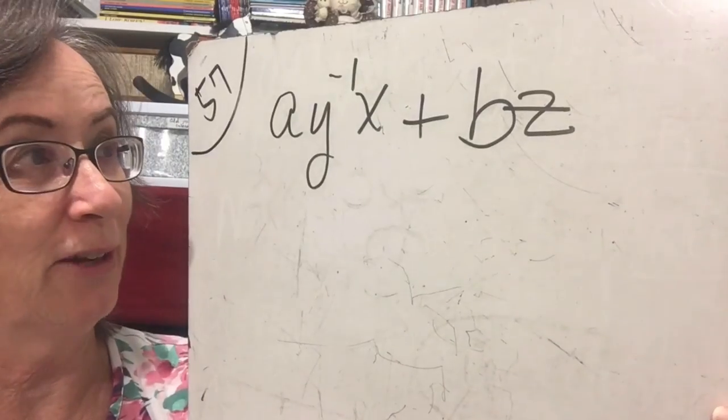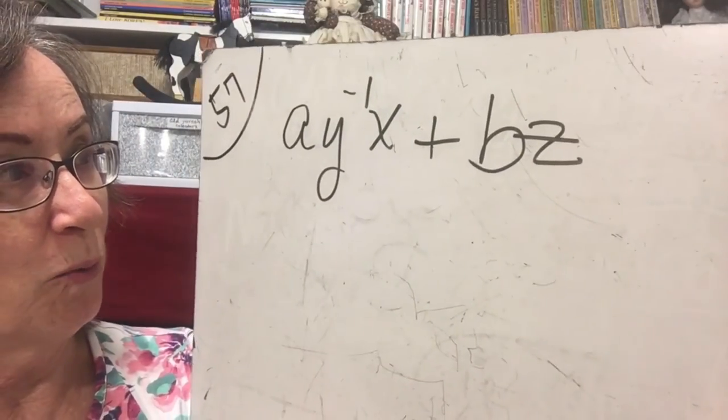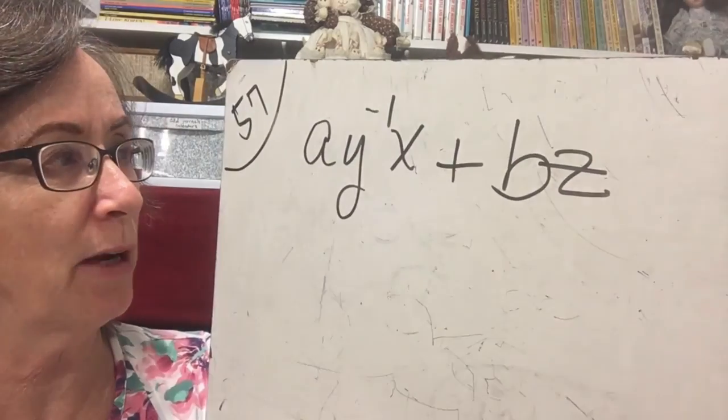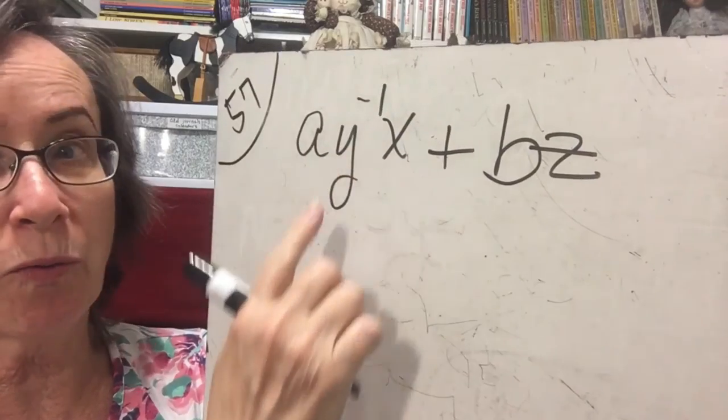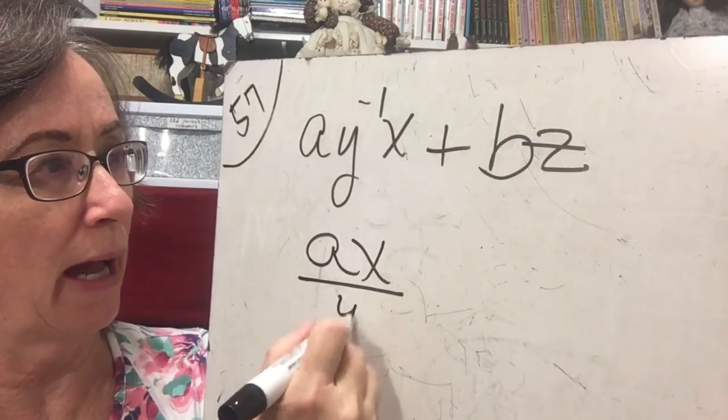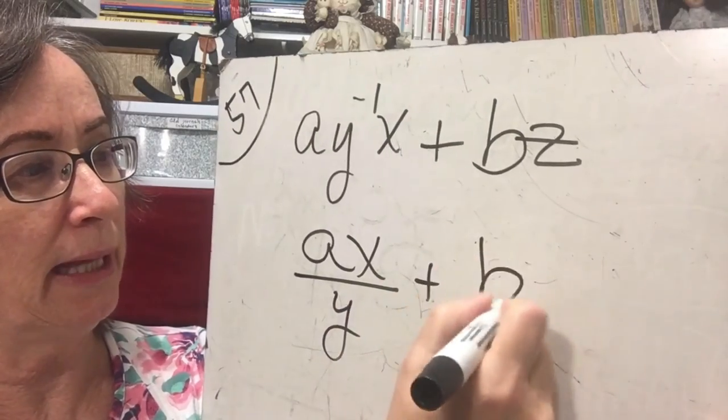So now I have the same denominator so I can just write it down there the common denominator y a plus x. Now that is considered simplified. Okay, so here's another example.